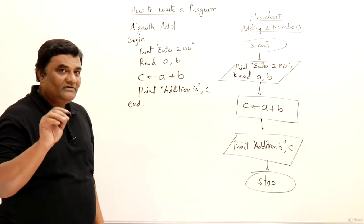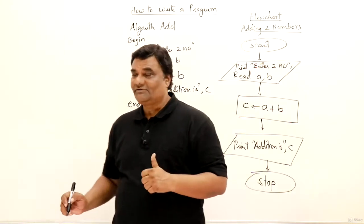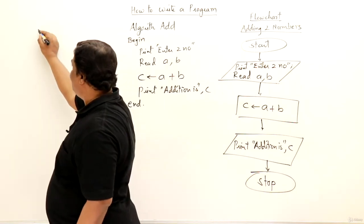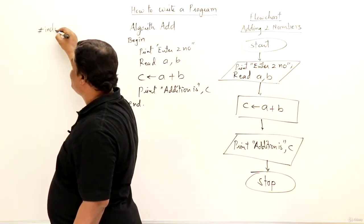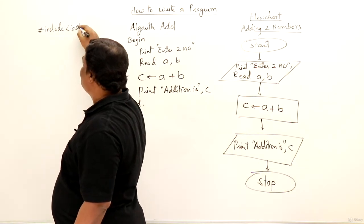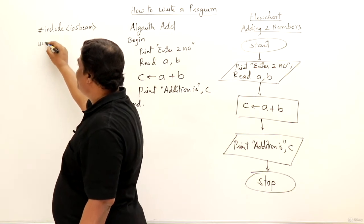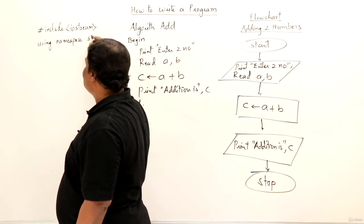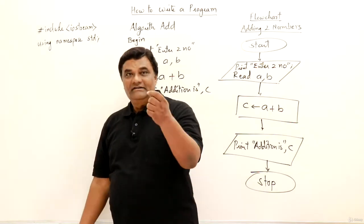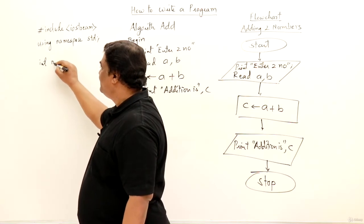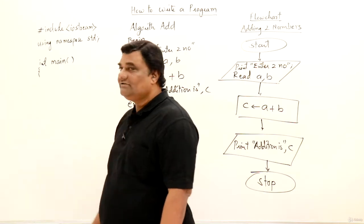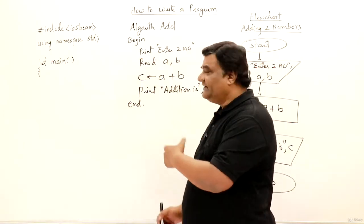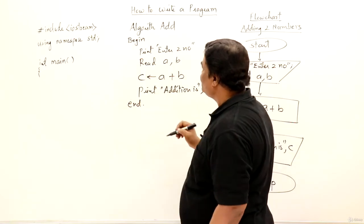As we go on writing more programs, this may become a little lengthy or complex — slowly we will move to it. Now I have to write down a C++ program for adding two numbers. First of all I will write down the skeleton of a C++ program. So I have to write: hash include iostream. Then I have to write 'using namespace std' — so whenever I am using cin and cout, this will be useful. Now the main function: int main. And starting of a main function. Now I have a flowchart and an algorithm — these two things I have to convert into a C++ program. From the algorithm we will convert it into a C++ program.